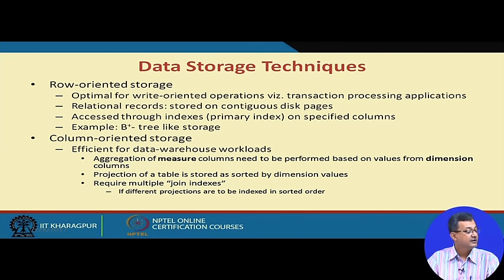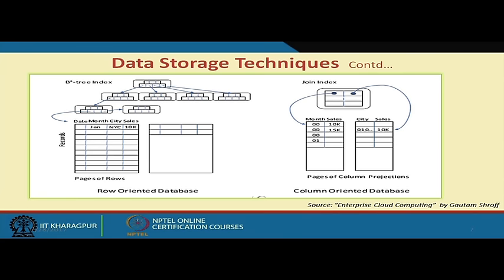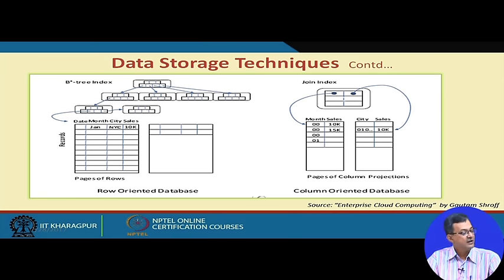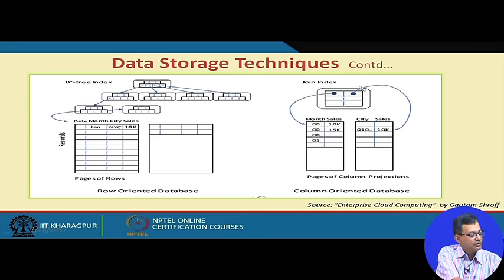In column-oriented storage, projection of a table is stored on a dimension table. Dimension values require multiple join indexes if different projections are to be indexed in sorted order, because the organization may need different views for different types of data. Data storage techniques include B+ trees and join indexes. In row-oriented data versus column-oriented data, a join index is needed to link the two. This is covered in standard database textbooks.